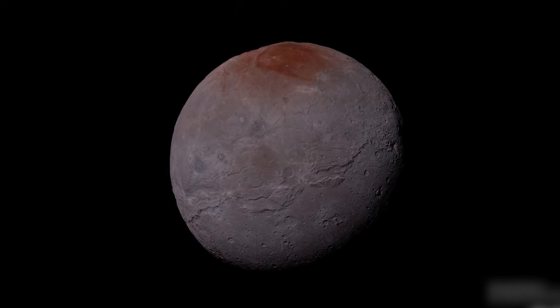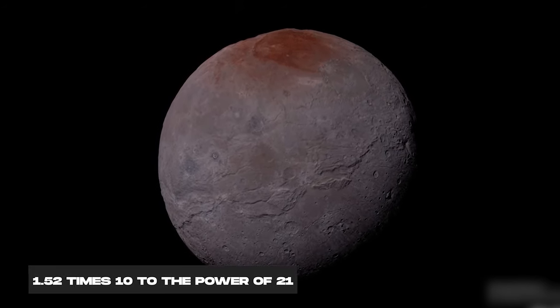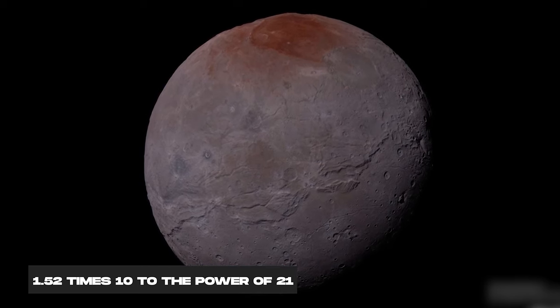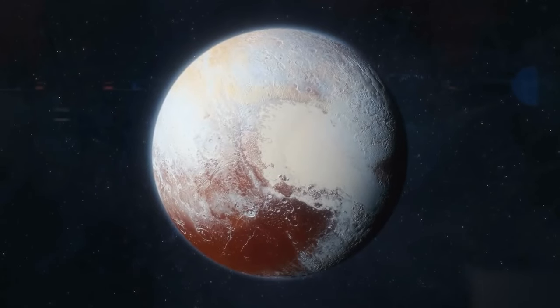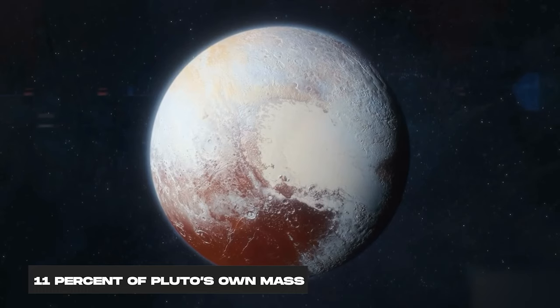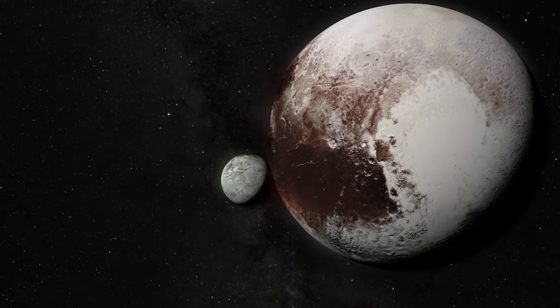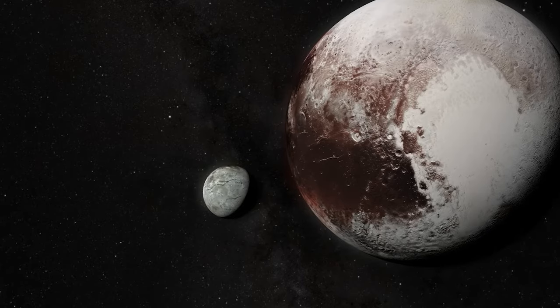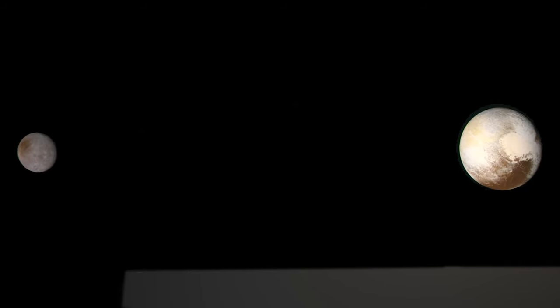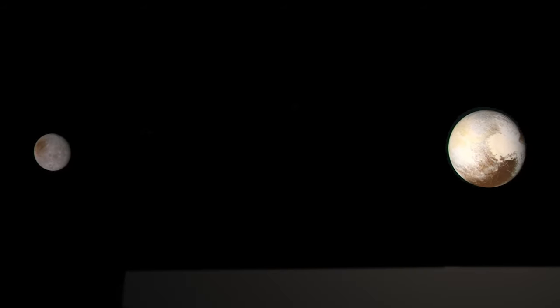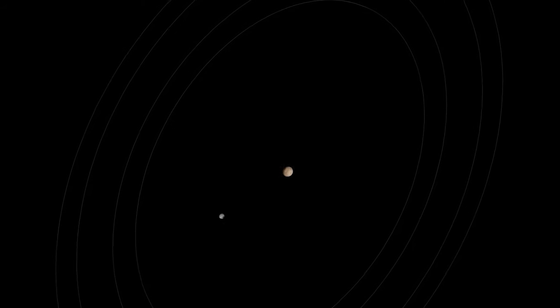Charon boasts a mass of 1.52 times 10 to the power of 21 kilograms, surpassing 11% of Pluto's own mass. Consequently, both Pluto and Charon orbit a common center of mass between them, rendering them tidally locked, with each always presenting the same face to the other.